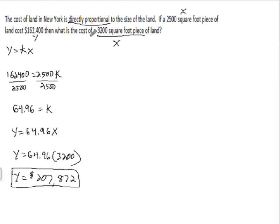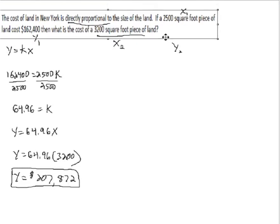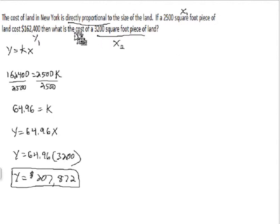Now, alternately, because it's directly proportional and they give us three of these pieces, we can call this x1, y1, x2, and then y2 is going to be our cost. We can set up our proportion and it really doesn't matter if we go y2 over x2, y1 over x1, as long as we are consistent. So let's just go y1 over x1, so 162,400 over x1 which is 2,500 equals y2, which we don't know, over the land which is 3,200 for our second piece of land. And now we can just solve our problem using cross products.